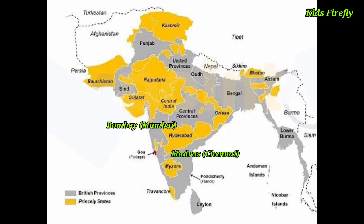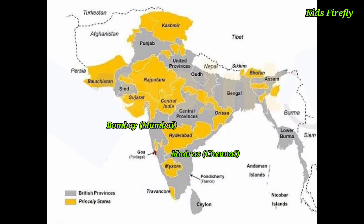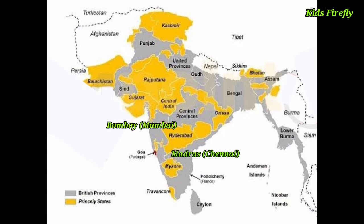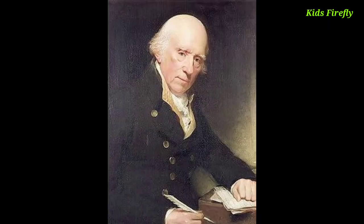British territories were broadly divided into administrative units which were called presidencies. There were three main presidencies — Bengal, Madras, and Bombay — each ruled by a governor. The Supreme Head of the administration was the Governor-General. The credit for introducing several administrative measures in the sphere of justice goes to Warren Hastings.